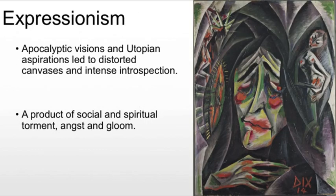They will also be freed from academic influence, trying to be outsiders. Unlike the Fauves, they tend to deal with contemporary social issues, often providing a reminder that God is dead and looking at the world as heavily flawed. We see apocalyptic visions and utopian aspirations. This is ultimately a product of social and spiritual torment, angst, and gloom. What you have in the early 20th century, especially in Germany, is this growing sense of impending doom.